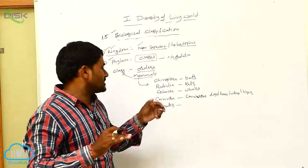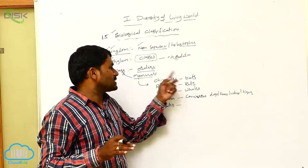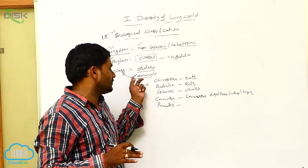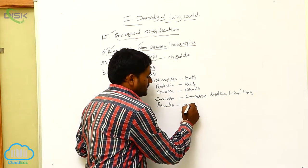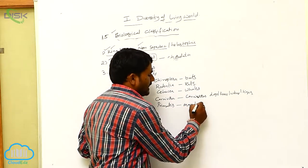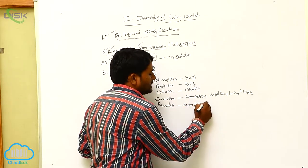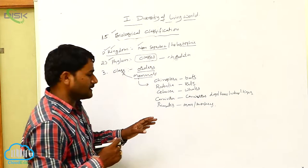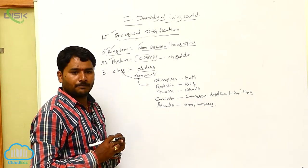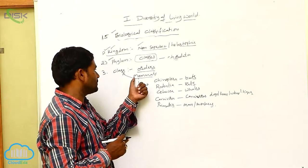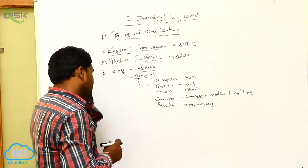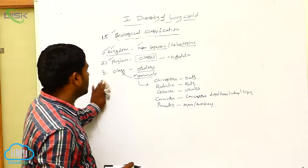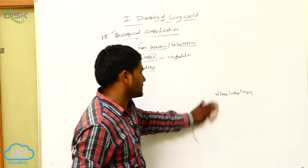So these are the different types of orders placed in the Mammalia class. In the Mammalia class, bats, rats, whales, carnivores, and primates — man, monkey, chimpanzee, gorilla — all come under the primate group. This is about the class Mammalia, which is made up of different types of orders.